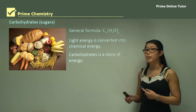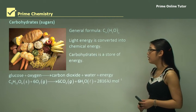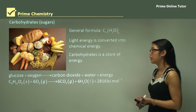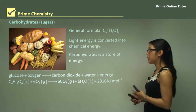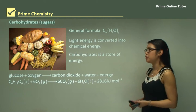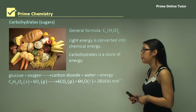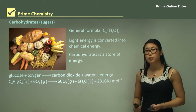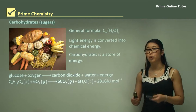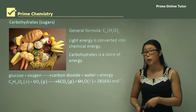Carbohydrates are a store of energy because when we break them down they release energy. Glucose plus oxygen gives us carbon dioxide plus water plus energy. Written out: C6H12O6 plus oxygen gives carbon dioxide, water, and 2816 kilojoules per mole.